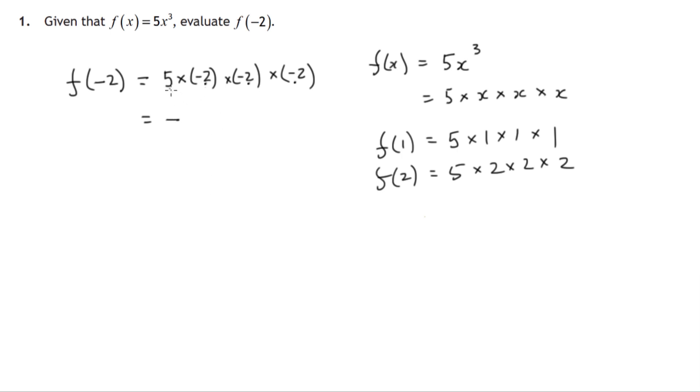And let's just work out the multiplication from left to right. 5 times 2, that's 10, times 2 is 20, times 2 is 40.